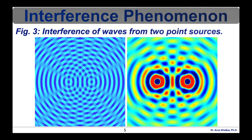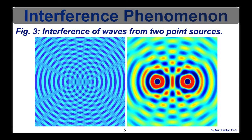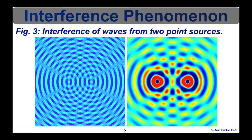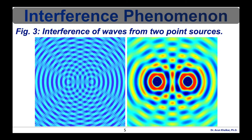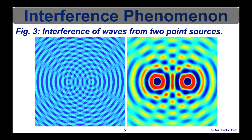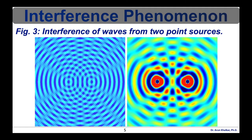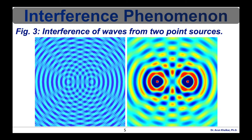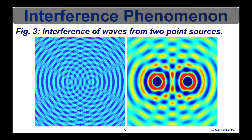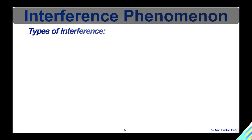Consider what happens when two identical stones are dropped into a still pool of water at different locations. Each stone generates a circular wave propagating outward from the point where the stone was dropped, as shown in the diagram. When the two waves overlap, the net displacement at a particular point is the sum of the displacements of the individual waves. At some points these will be in phase and will produce a maximum displacement; in other places, the waves will be in anti-phase and there will be no net displacement. Thus, part of the surface will be stationary, seen in the figure as stationary blue-green lines radiating from the center.